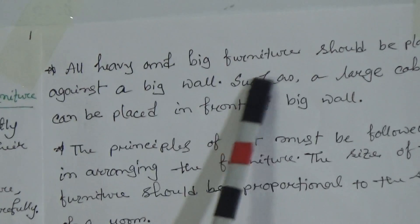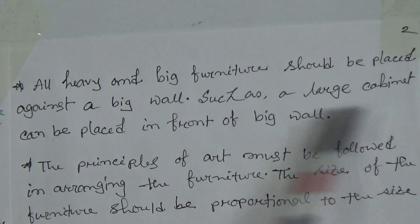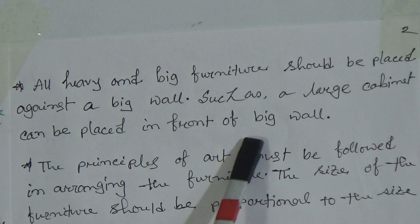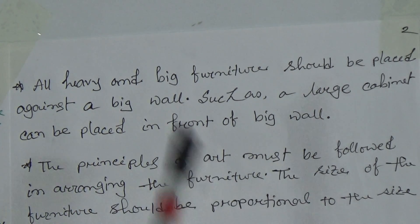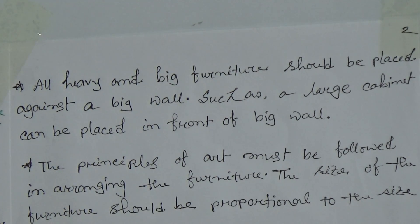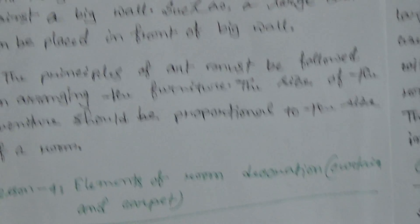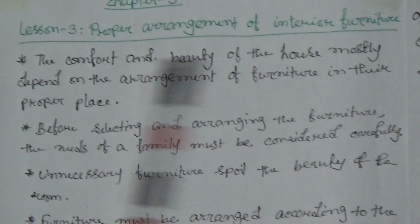All heavy and big furniture should be placed against a big wall, such as a large cabinet can be placed in front of a big wall. The principles of art must be followed in arranging the furniture. The size of the furniture should be proportional to the size of a room.